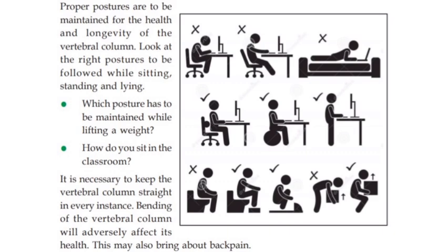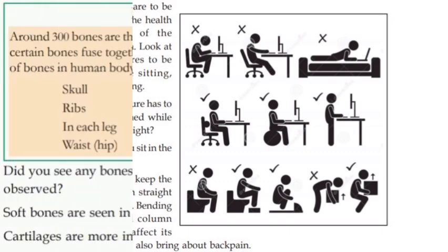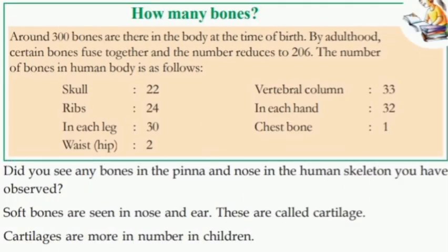How many bones? Around 300 bones are there in the body at the time of birth. By adulthood, certain bones fuse together and the number reduces to 206.